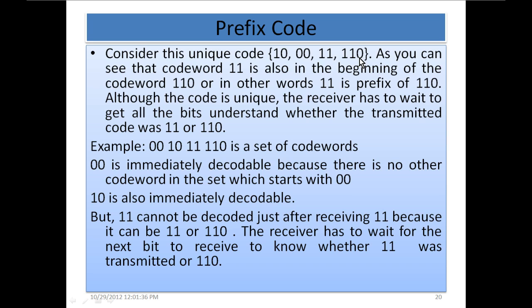If it receives a 0 after 1 1, then it will understand the code is 1 1 0. But if it receives 1 1 and then receives two 0s or some other code, then it will know that it was 1 1.